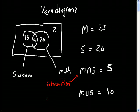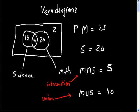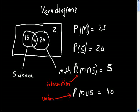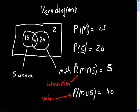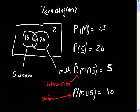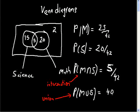For A-level maths and statistics, you'd be asked for probabilities, so put P's in front with brackets. You need to give values like 5, 20, 25, and 40 as probabilities out of the whole class. The total number in the class is 15 + 5 + 20 + 2 = 42. So all of these values are divided by 42.